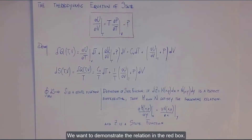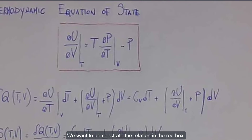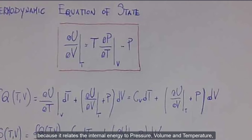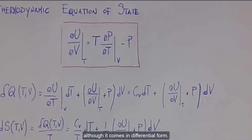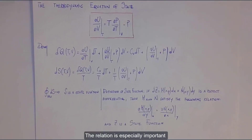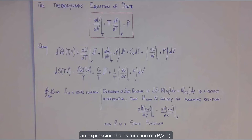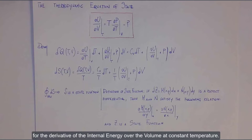We want to demonstrate the relation in the red box. This relation is called the thermodynamic equation of state because it relates the internal energy to pressure, volume, and temperature, although it comes in a differential form. The relation is especially important because it solves the issue of finding an expression that is a function of PVT for the derivative of the internal energy over the volume at constant temperature.